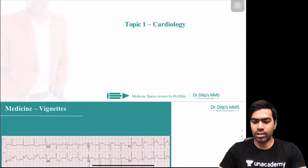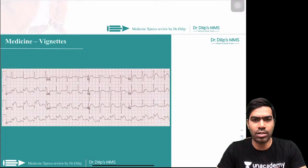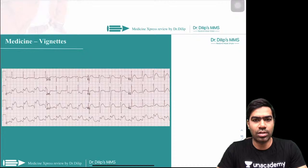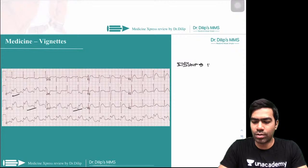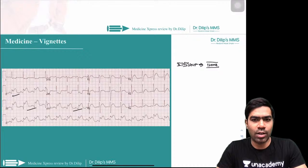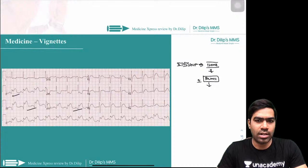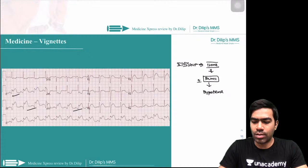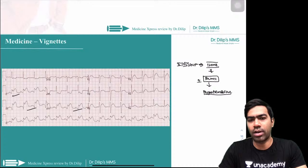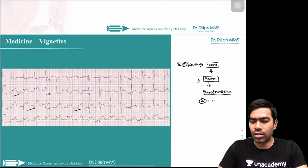The first topic is cardiology. We'll go through around 150 images covering the most important topics. Starting with ACS — this is an inferior wall STEMI. ST elevations in leads 2, 3, and AVF allow you to diagnose an inferior wall STEMI. The most important complication to expect is an associated right ventricular MI. If they ask about the complication, it's right ventricular myocardial infarction — expect hypotension and shock due to poor right ventricular contraction, so the left ventricle doesn't receive enough preload.